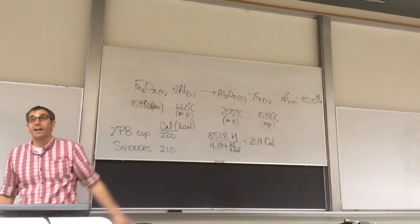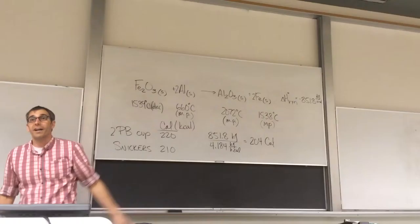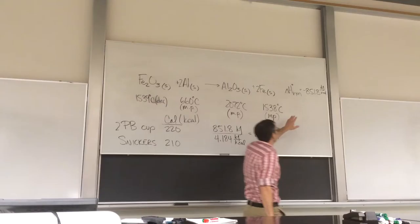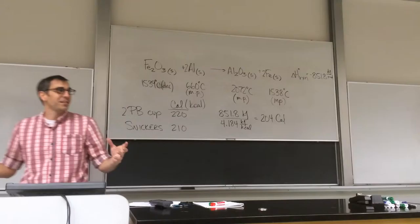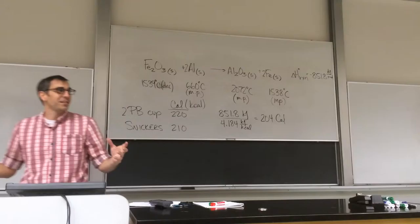So today we're going to see your reaction because I made it with one mole of iron oxide. Okay, so one mole of iron oxide. So my total energy release, as long as the energy is conserved, is negative 851.8 kilojoules, which will be slightly less than the amount of energy totally in a Snickers bar or two Reese's Peanut Butter Cups.